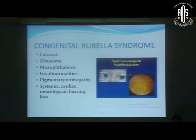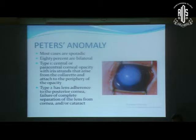Congenital rubella syndrome can also present with congenital glaucoma, but there will be other ocular and systemic associations: congenital cataract, microphthalmia, iris abnormalities, pigmentary retinopathy, and systemic abnormalities including cardiac, neurological, and hearing loss.